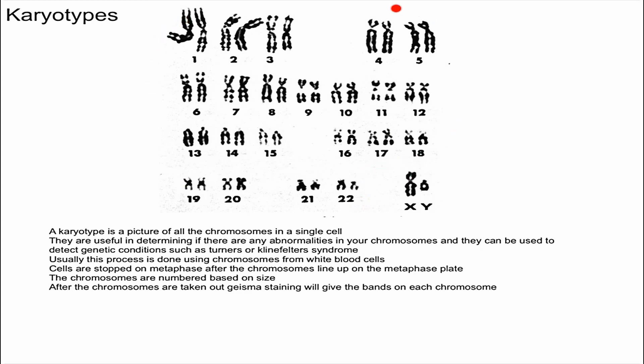The autosomes are chromosomes 1 to 22 — all of these over here. An example of an autosomal abnormality would be Down syndrome, where you have three copies of chromosome 21. To sum it up, the karyotype will allow you to know a lot about the genetic information of an individual, determine if there are any genetic disorders, and also determine the sex of the individual.